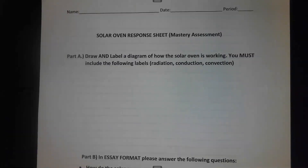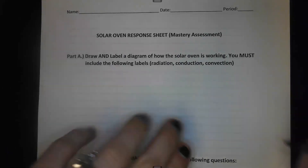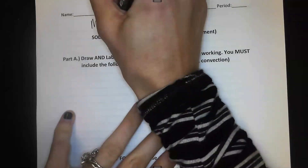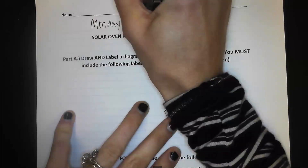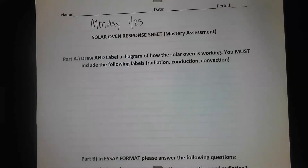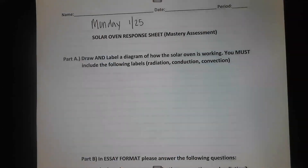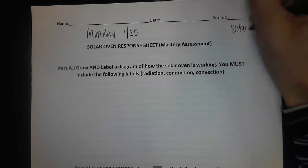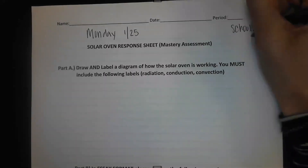We're talking about the solar oven response sheet. A-day students, yours is due on the 25th. B-day students, yours is due Friday the 22nd. This is found in Schoology — the submit day on Schoology is the 20th.